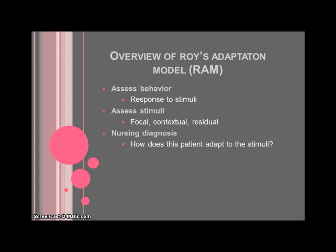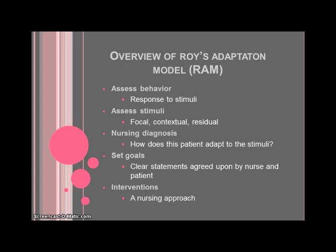Once a judgment has been made regarding the patient's adaptive status, the nurse and client need to honestly discuss goals, which will be realistic and include the behavior expected. Lastly, evaluation addresses the effectiveness of the interventions and determines if the goals were met.